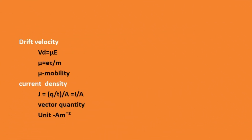Next one is drift velocity. Drift velocity is defined as the velocity with which free electrons get drifted towards the positive terminal when an electric field is applied. We can write the drift velocity VD equal to mu E. Here mu is called the mobility, defined as drift velocity per unit electric field. That is mu equal to e·tau by M.